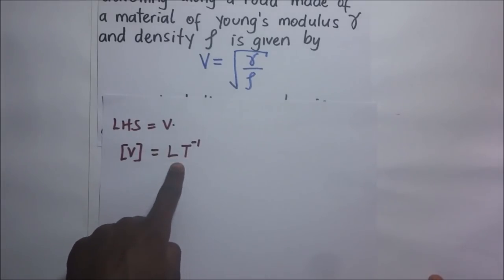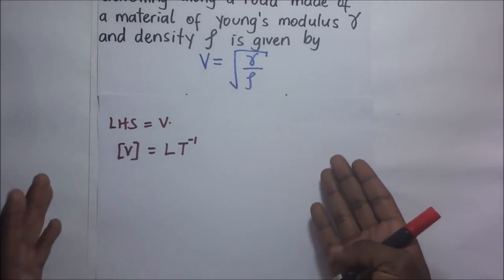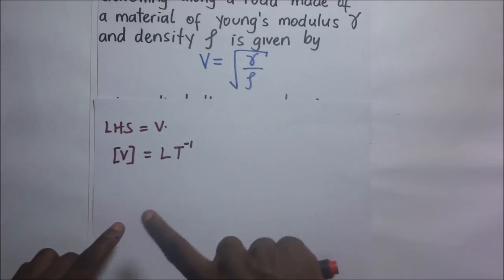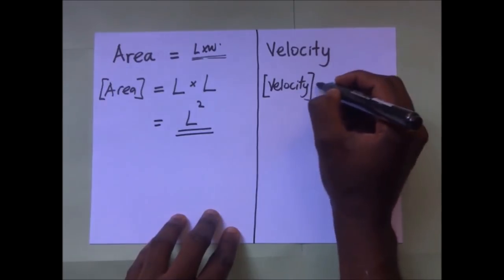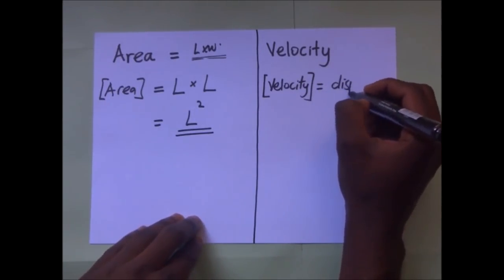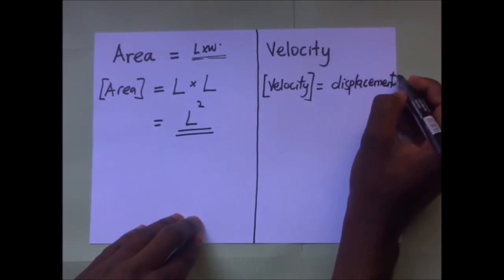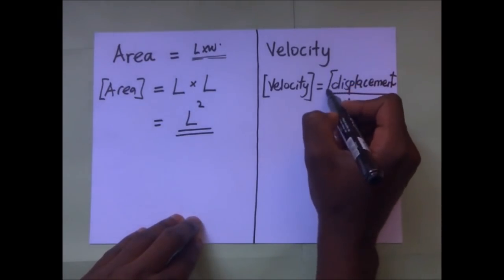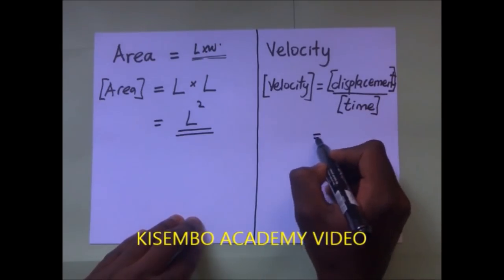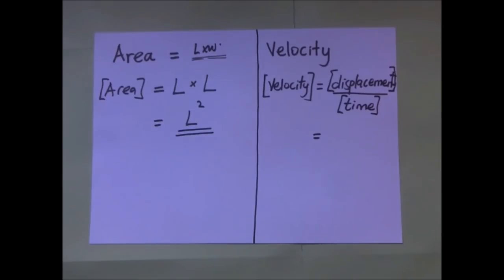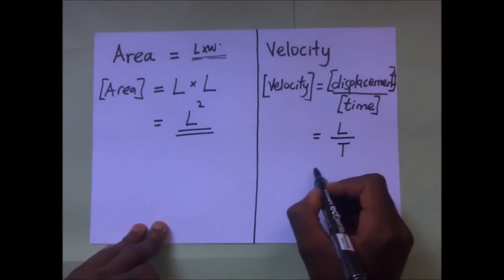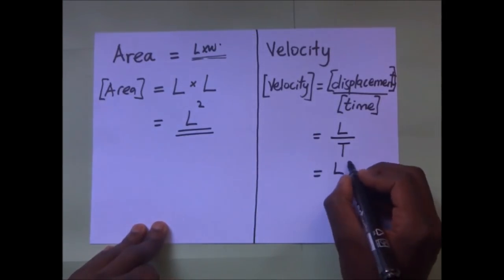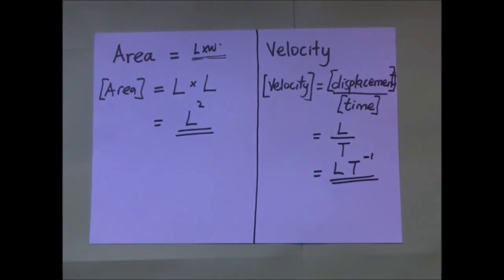To find dimensions of velocity: velocity equals displacement divided by time, so displacement is a length L divided by time T, giving LT⁻¹. These are the dimensions of velocity.